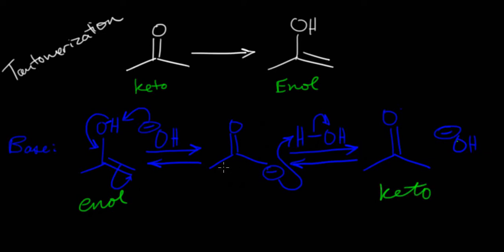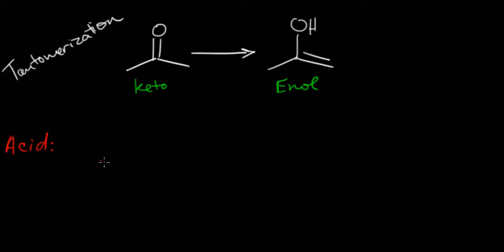So now let's jump into our acid-catalyzed tautomerization. Okay, for our acid-catalyzed tautomerization, we're going to start with our keto, like we did for the base. For my acid, I'm going to use hydronium, just because it's easy.